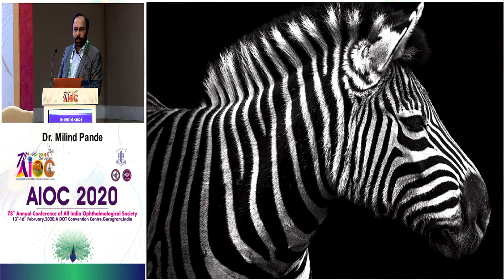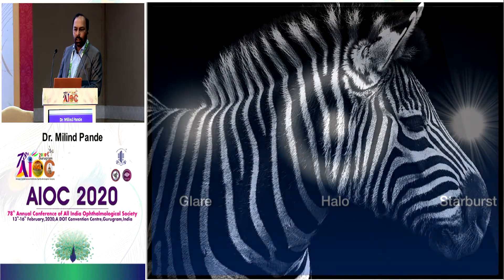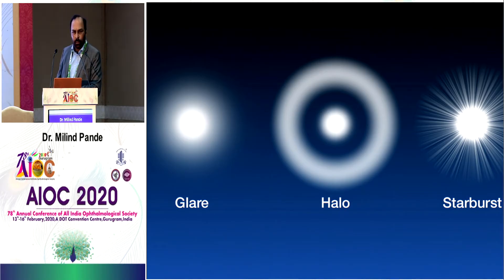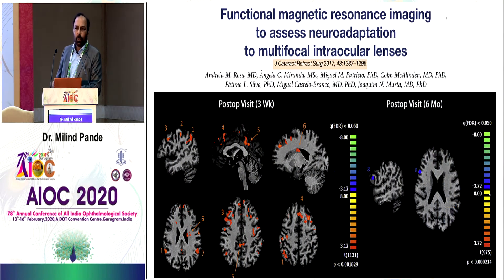I then talk to them about contrast, glare, halos, and starburst. I say to them: you cannot get multifocality without getting halos — that's a law of physics. So when you see a halo after your surgery, think of it as the lens doing what it's designed to do, and it becomes a positive thing for the patient to look for. We know that with neuroadaptation all these symptoms tend to improve, and there is good scientific evidence — functional MRI studies show significant neuroadaptation in multifocal patients within six months.